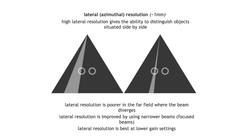Lateral (azimuthal) resolution — with a typical value of about 1 mm — is the ability to distinguish side-by-side objects. Lateral resolution is poor in the far field where the beam diverges. It can be improved by using narrower beams through focusing — either via the acoustic lens or phased array timing of piezoelectric crystals. Lateral resolution is also better at lower gain settings. Together, axial and lateral resolution comprise spatial resolution.